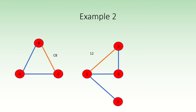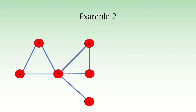First, identify vertices c and one. Next, delete the edges from our merged vertex to vertices b and two. Finally, draw an edge between vertex b and vertex two. This is the result.